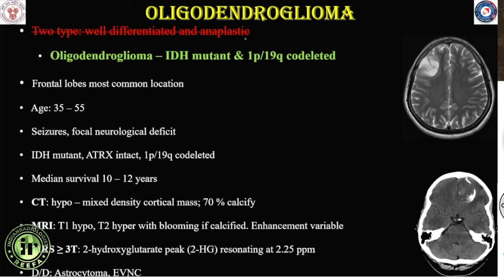Previously, two subtypes were described — well-differentiated and anaplastic oligodendroglioma — which no longer exist under WHO 2021 CNS classification. Oligodendroglioma is an IDH mutant and 1p19q co-deleted tumour, most commonly located in the frontal lobes, cortical-based, usually presenting between the 4th to 6th decades. Clinical features include seizures or focal neurological deficits, especially when in close proximity to the cortex. Like IDH mutant astrocytoma, it can demonstrate the 2-hydroxyglutarate peak on MR spectroscopy at 3 Tesla. Median overall survival is the best among diffuse glial neoplasms at about 10 to 12 years. On CT, approximately 70% of oligodendrogliomas demonstrate chicken wire calcification.